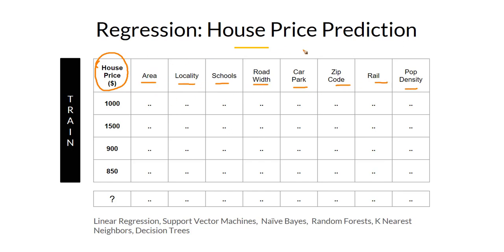These are all the different information available for each of the houses. Initially, in the data set, you will also have the price information available. The ML algorithm will learn from this information about each of these houses and map it to the respective prices in this data. The machine learning algorithm learns this relationship.